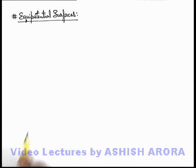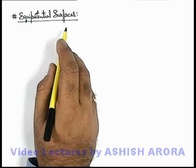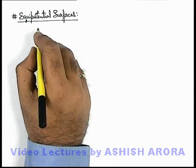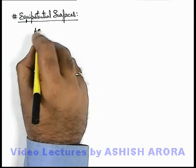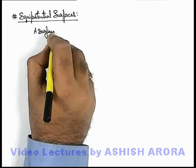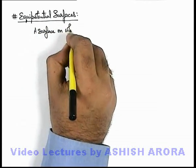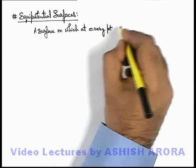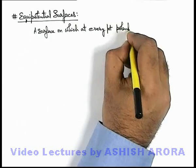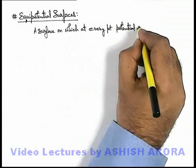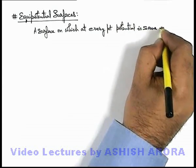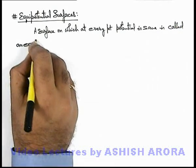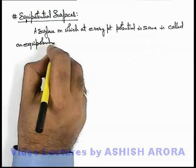Let us study about equipotential surfaces. As the name implies, a surface on which at every point the potential is the same is called an equipotential surface.